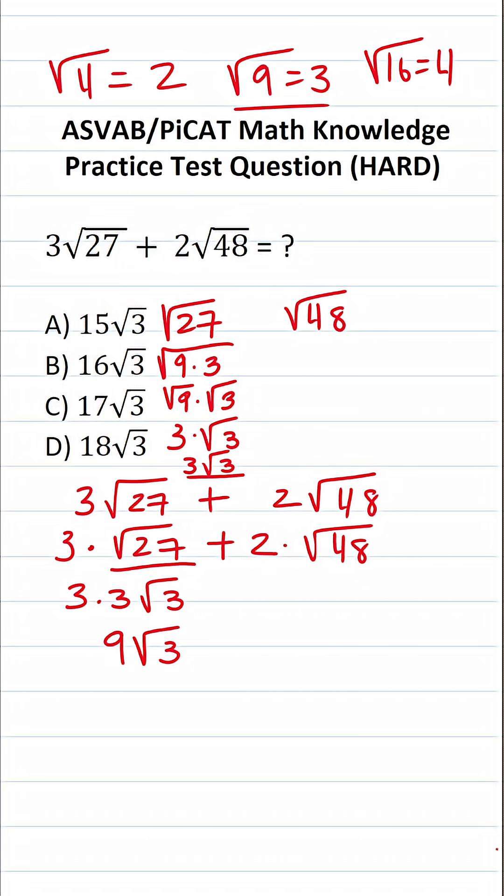All right, let's go ahead and work on 48 now. 48 is the same thing as 16 times 3. And again, I could break this apart to be the square root of 16 times the square root of 3. Square root of 16, as I pointed out, is 4. So, this is 4 times the square root of 3, which we can write as 4 square root 3.